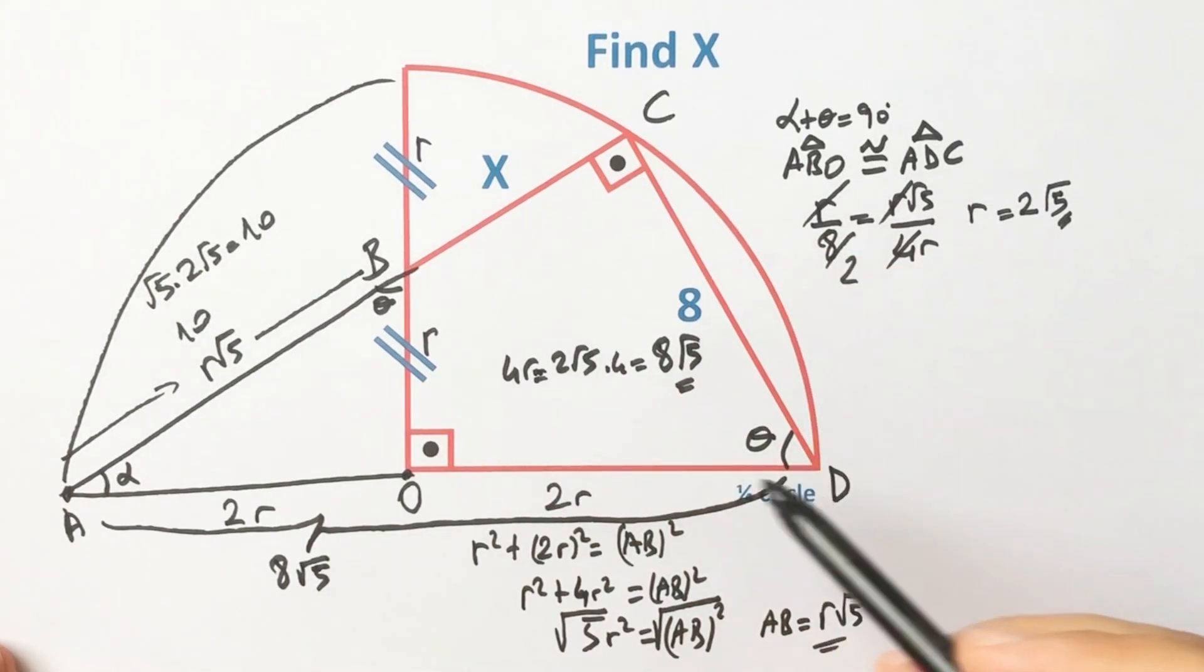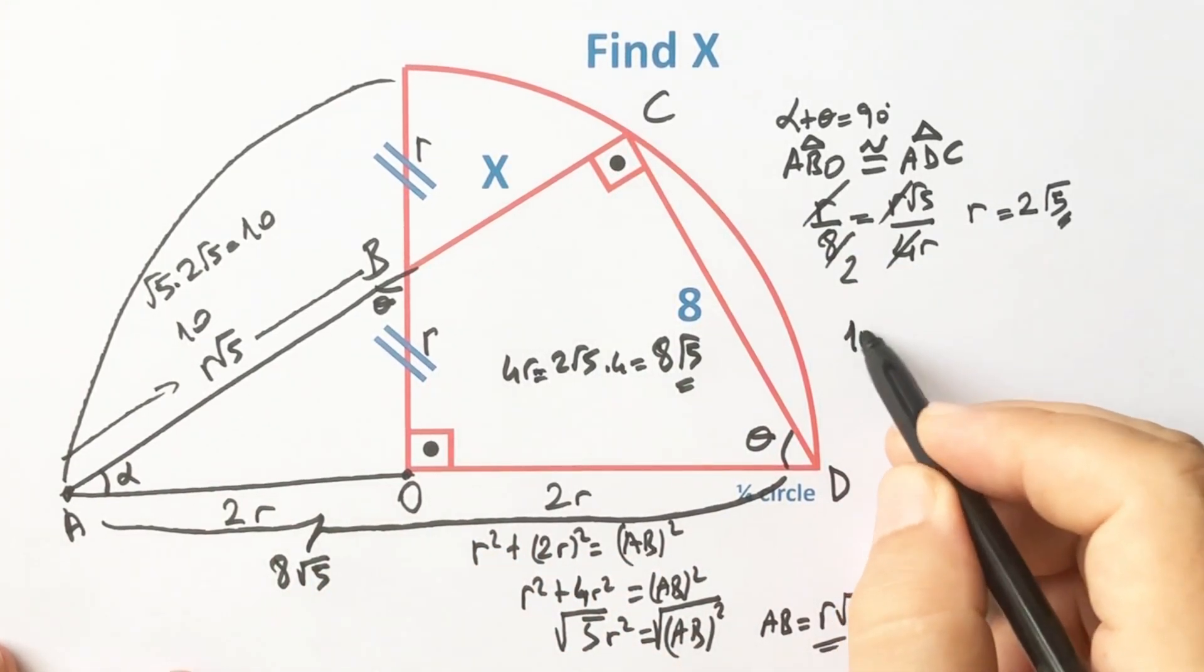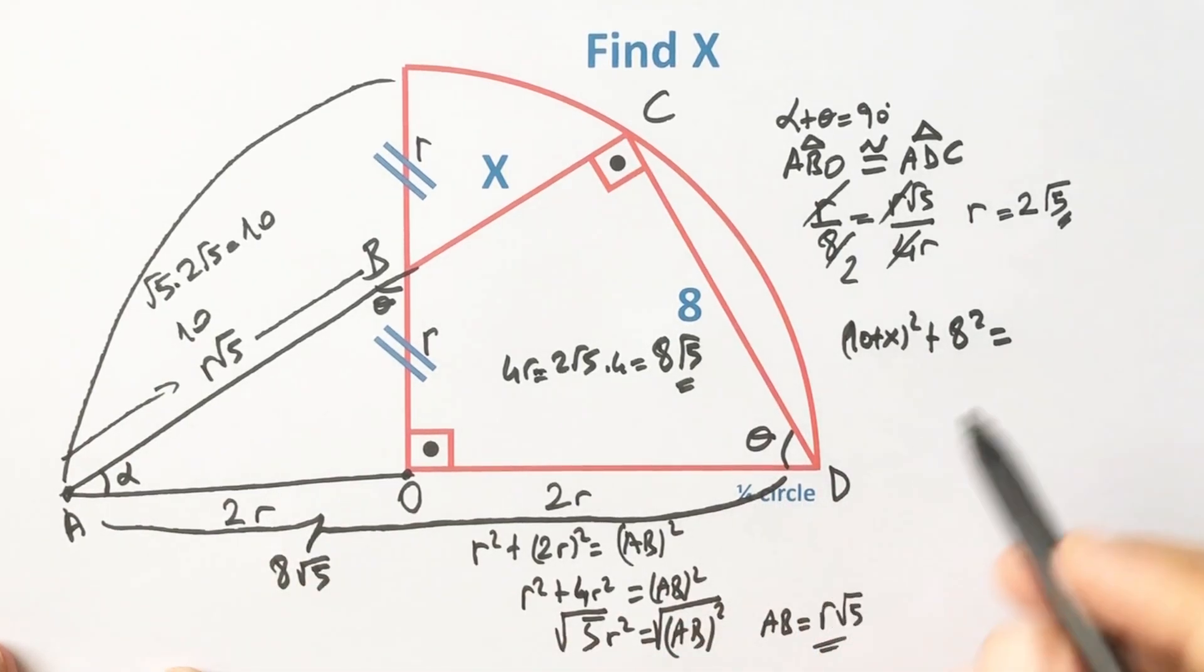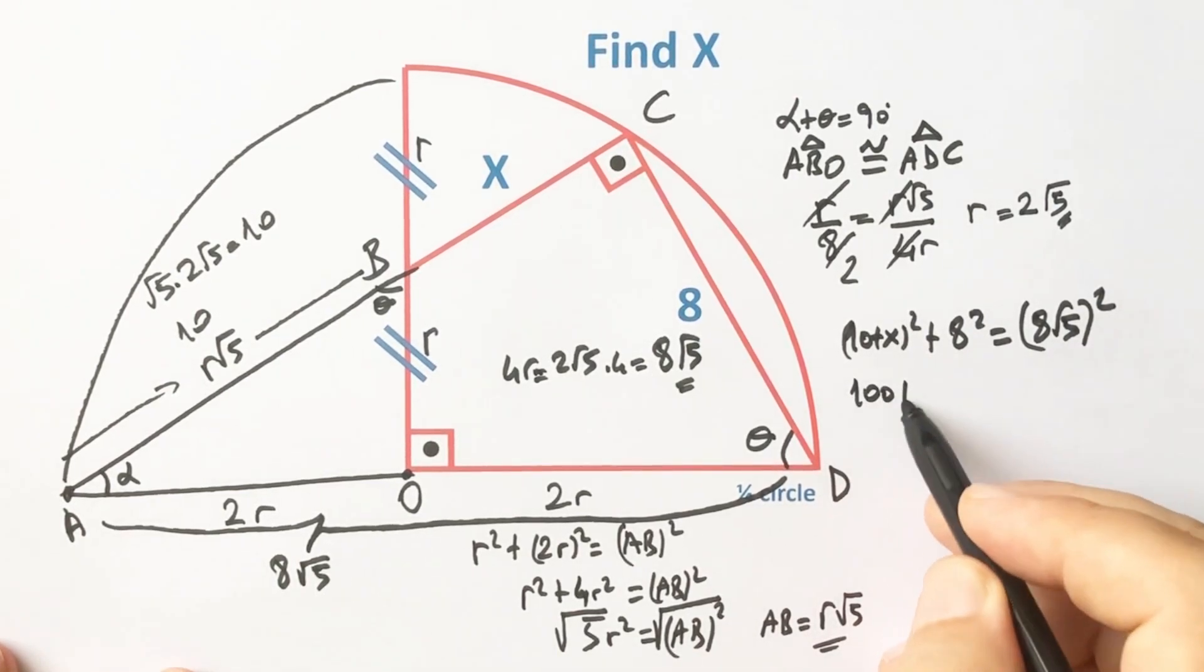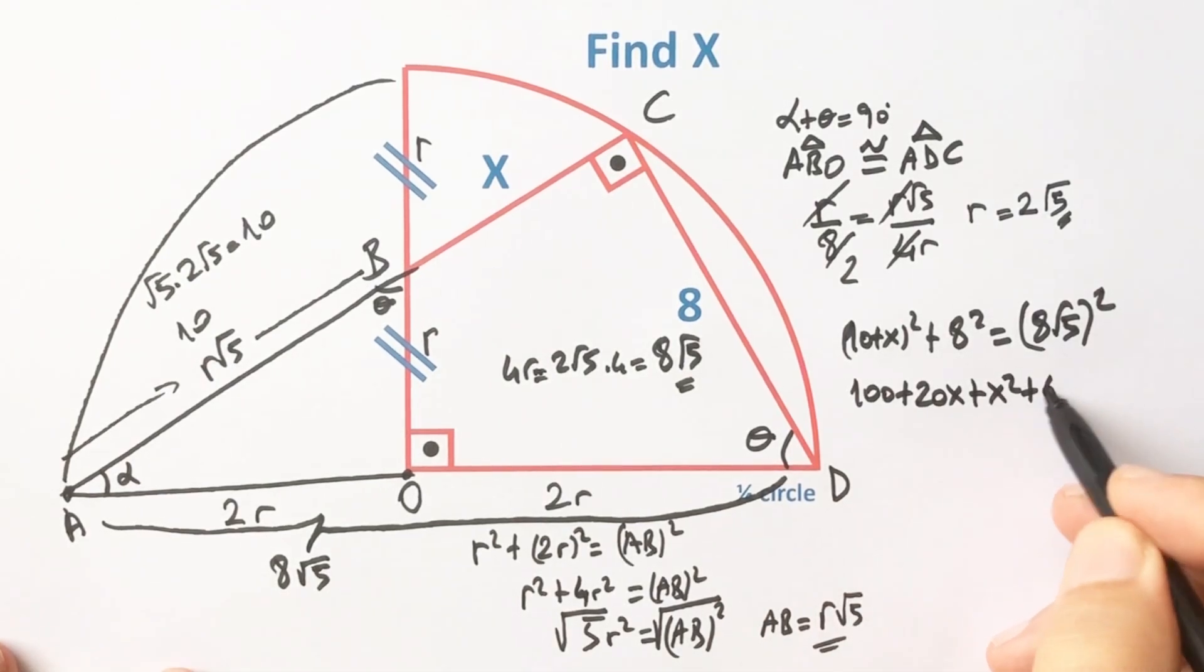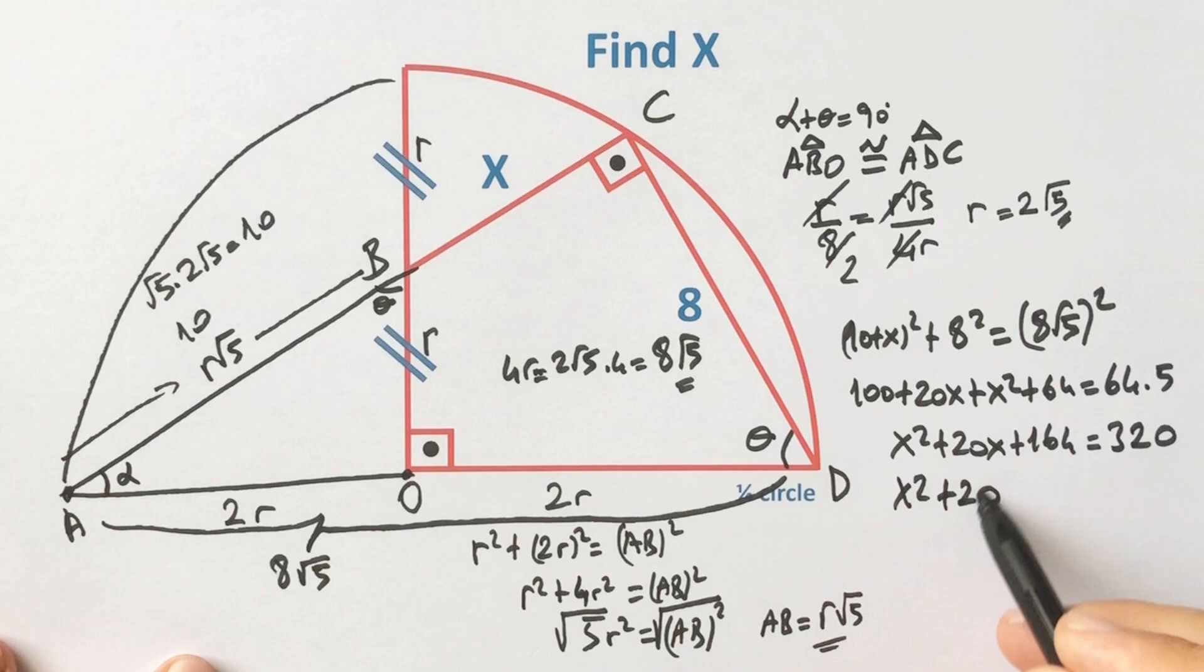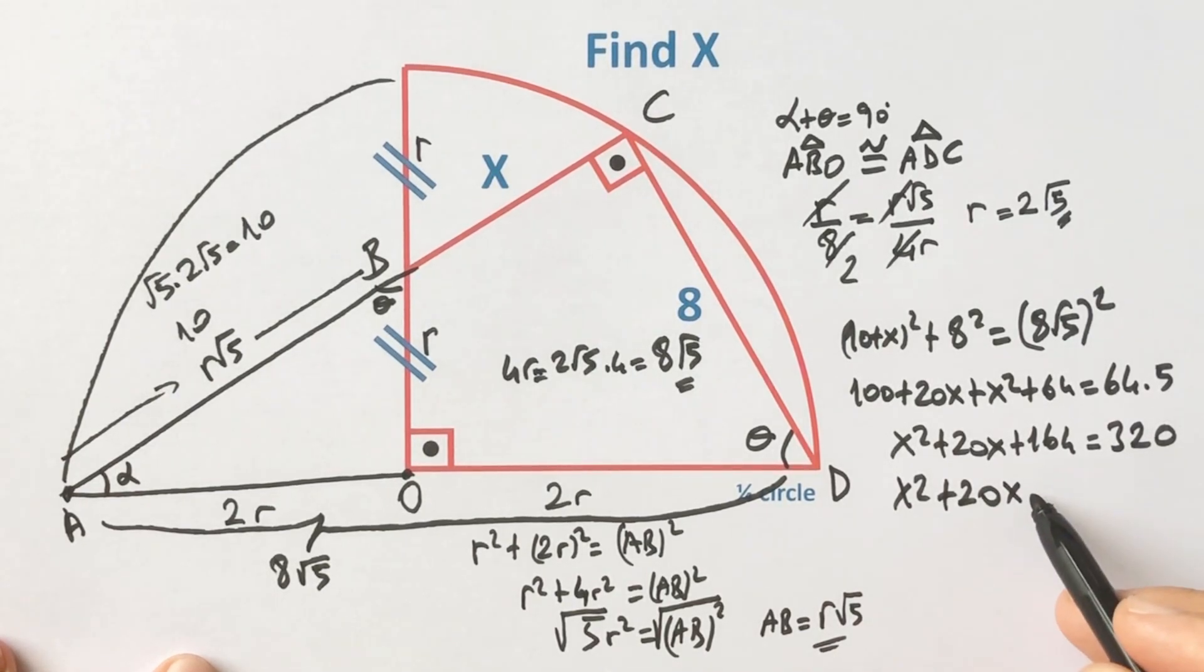Now applying the Pythagorean theorem to the largest triangle: (10 + x)² + 8² = (8√5)². Therefore, 100 + 20x + x² + 64 = 320. So x² + 20x + 164 = 320, which gives x² + 20x - 156 = 0.